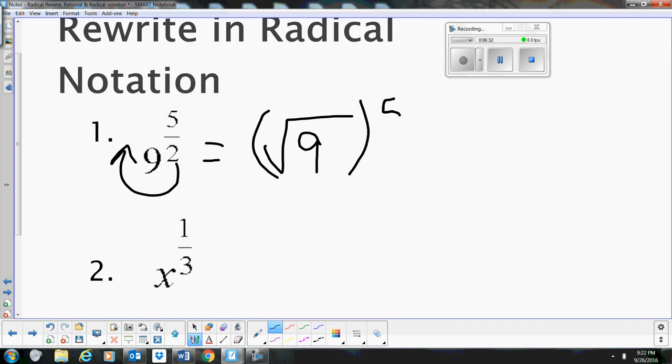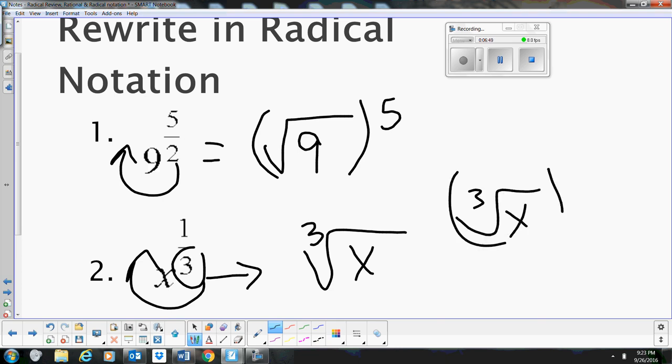all to the 5th power. And then this next one is the variable x, so that's our base. Our root, it comes over, and it is the cube root of x, all quantity to the 1st. So I don't need to write that quantity. You don't have to write it all raised to the 1st power, because we assume it's to the 1st.